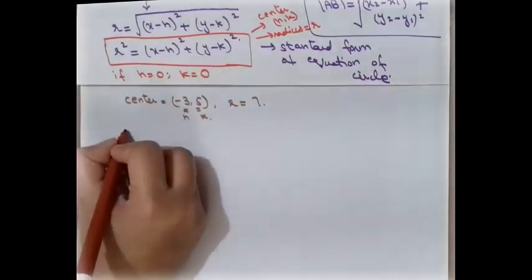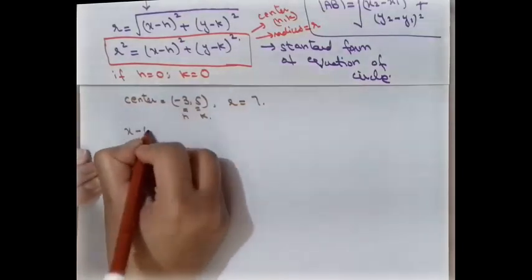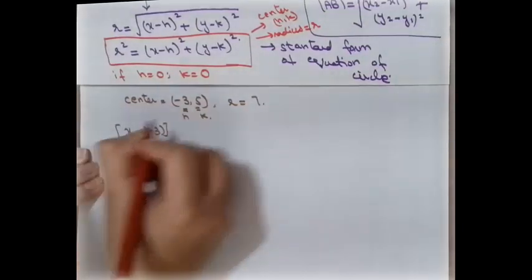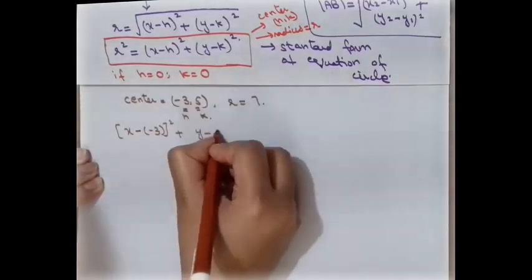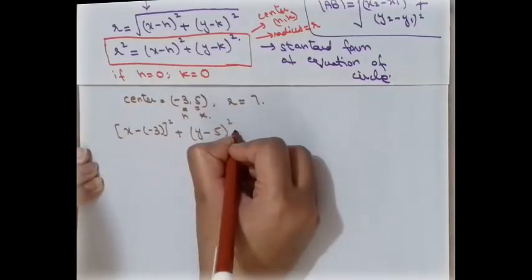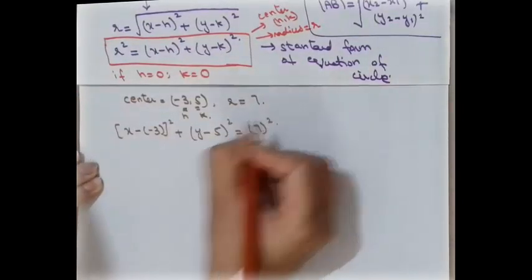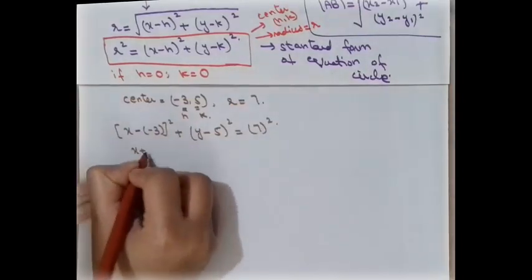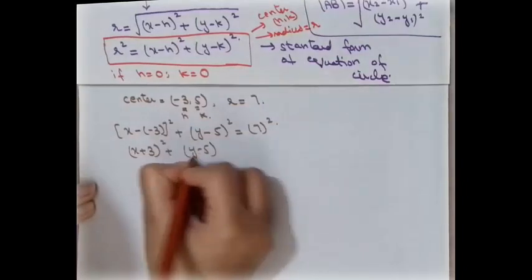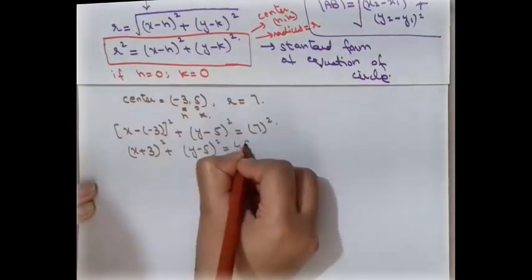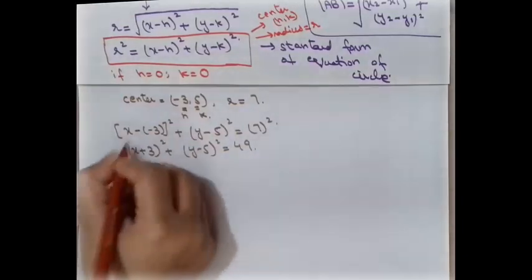Substituting: (x − (−3))² + (y − 5)² = 7². This simplifies to (x + 3)² + (y − 5)² = 49. Expanding: x² + 9 + 6x + y² + 25 − 10y = 49.